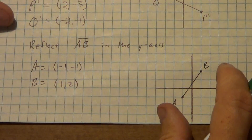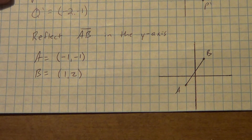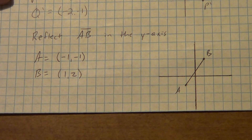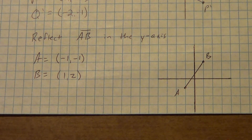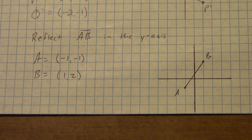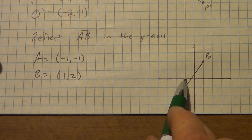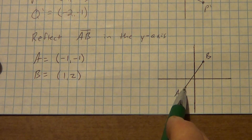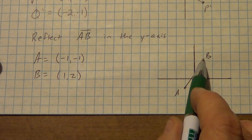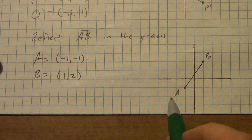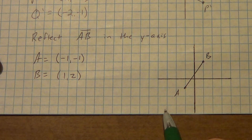Next one: let's reflect A, B in the y-axis. Pause the video if you need to, copy it down. A is at (negative 1, negative 1) and B is at (1, 2).